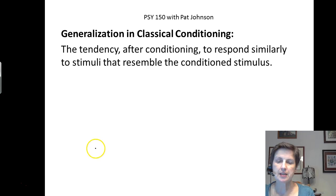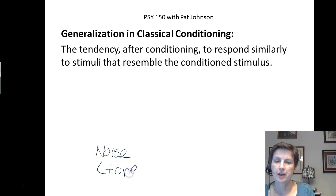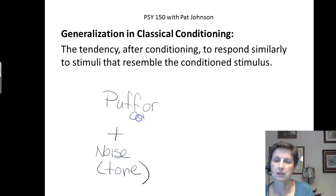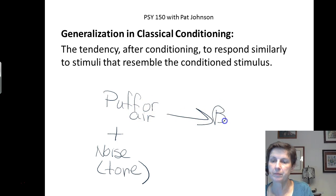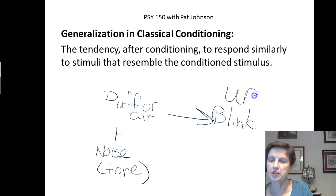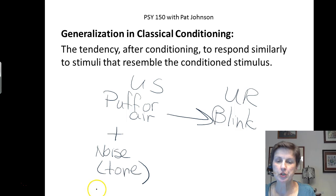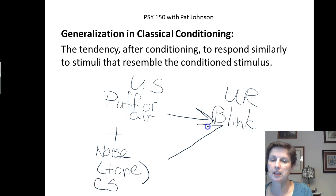Let's suppose that I made a noise — maybe a tone, a particular tone — and then I blew a puff of air in your eye and you blinked. Blinking to the puff of air would be the unconditioned response, the puff of air would be the unconditioned stimulus, and the noise which used to be neutral would be the conditioned stimulus, and blinking to that noise would be the conditioned response.